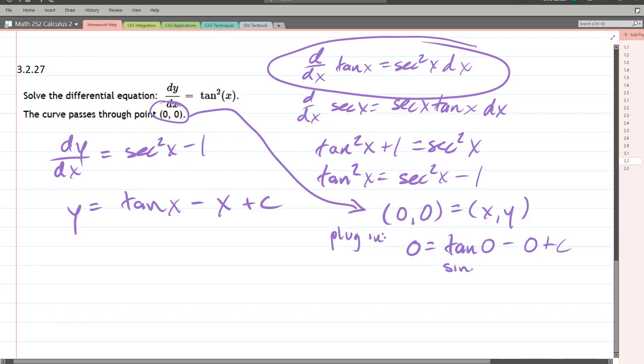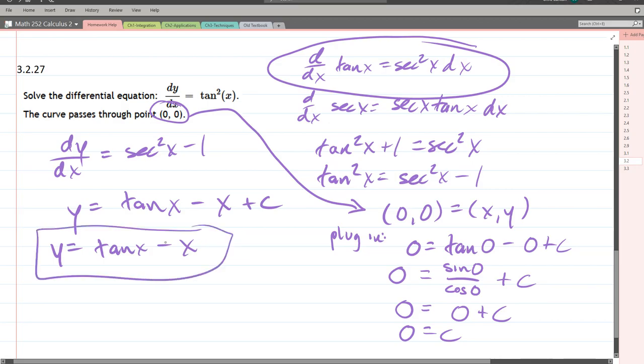Tangent is sine over cosine. So sine 0 over cosine 0 plus c. So sine of 0 is 0. Cosine of 0 is 1. So we have 0 equals c. So our constant is 0. So you don't actually have to write the plus 0. You can just leave it like that right there.